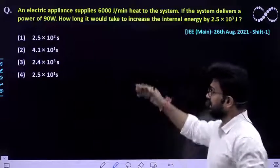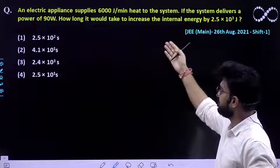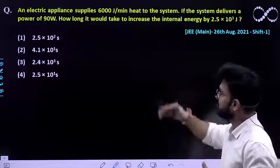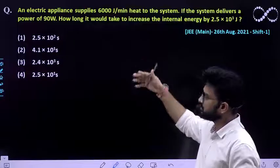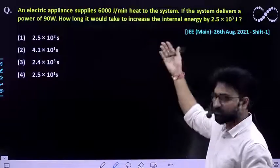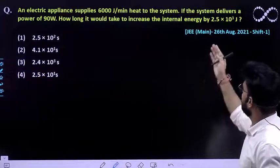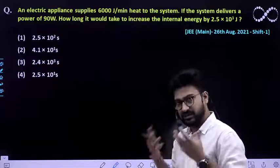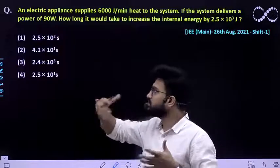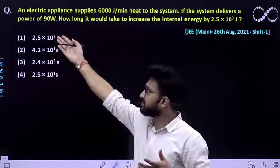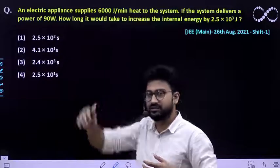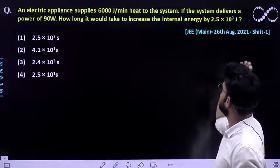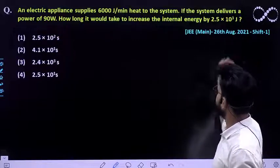The question says an electric appliance supplies 6000 Joules per minute of heat to the system. That means you have been given an electrical appliance which is supplying a certain amount of energy per minute to a particular system. If the system delivers a power of 90 watts — that is, the work done per second is 90 watts — how long would it take to increase the internal energy by 2.5 × 10³ Joules?